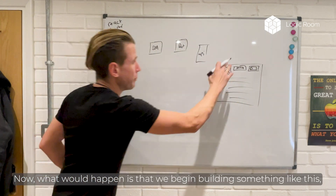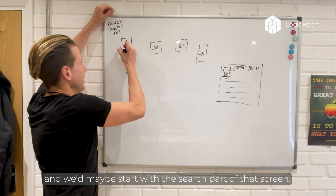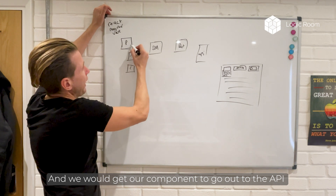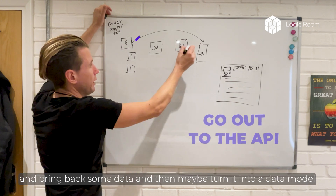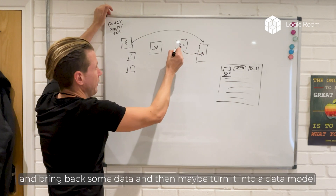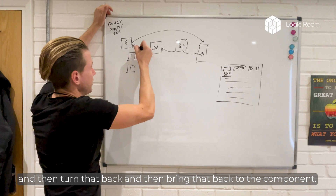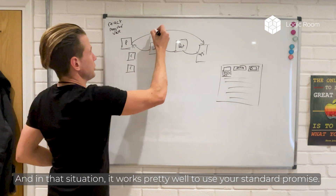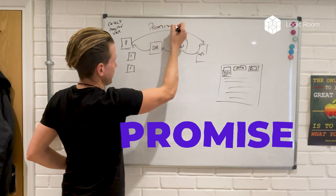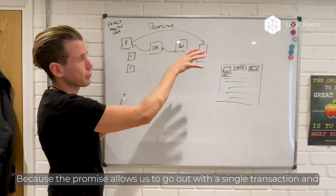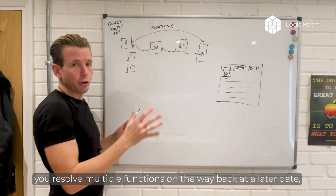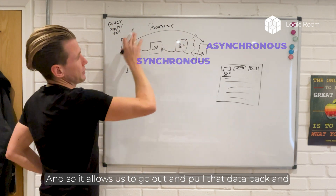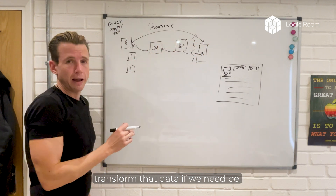What would normally happen is that we'd begin building something like this and maybe start with the search part of that screen. We would get our component to go out to the API and bring back some data, then maybe turn it into a data model, bring that back to the component. In that situation, it works pretty well to use your standard promise, because the promise allows us to go out with a single transaction and resolve multiple functions on the way back at a later date — this is obviously asynchronous — and it allows us to pull that data back and transform it if we need to.